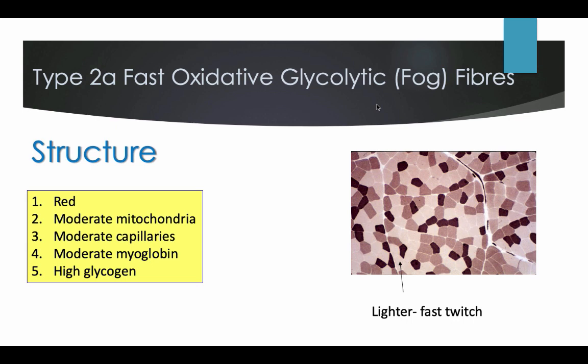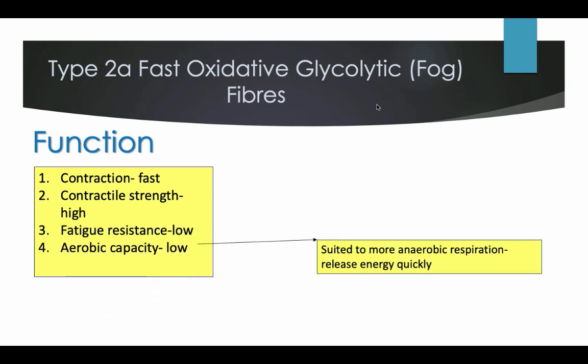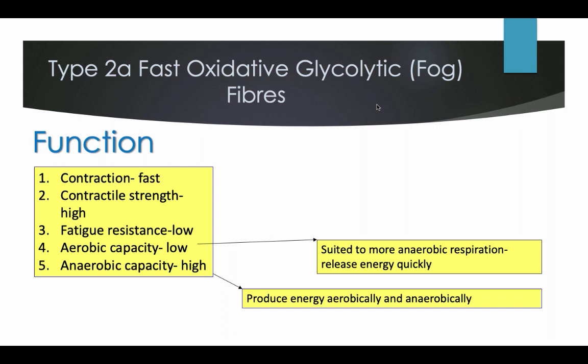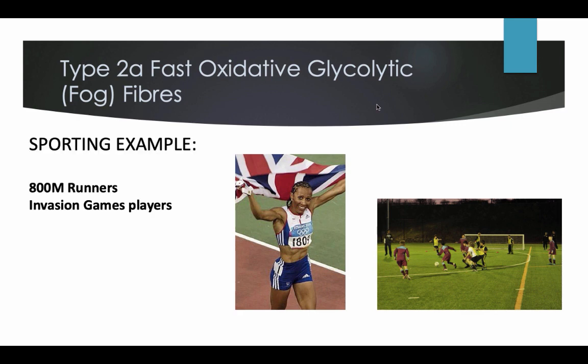In the diagram here of a breakdown of a muscle fibre, all the white areas are fast twitch fibres. The functions of type 2A: they contract quickly, have a high contraction strength, and a low fatigue resistance. Their aerobic capacity is low; they are suited to more anaerobic respiration because they release energy quickly. Their anaerobic capacity is high because they produce energy anaerobically. Type 2A fast oxidative glycolic fibres are usually found in sports such as 800m runners and invasion game players.